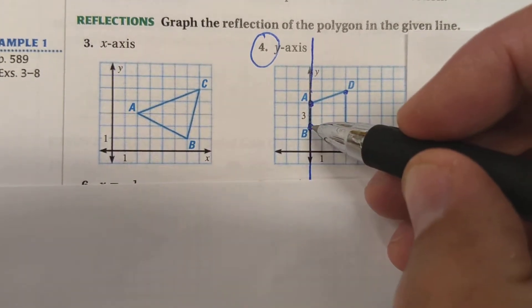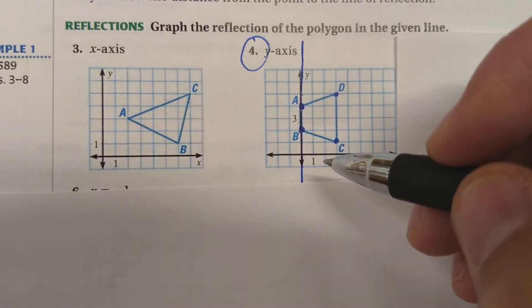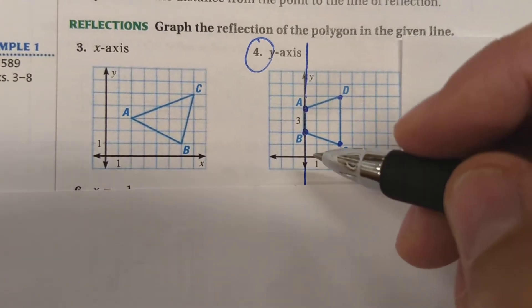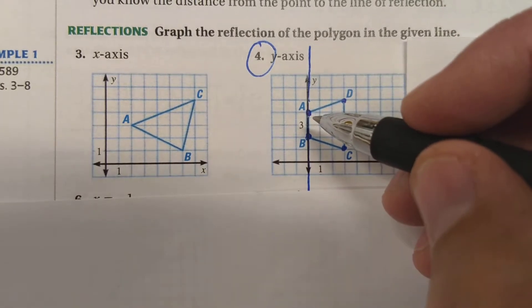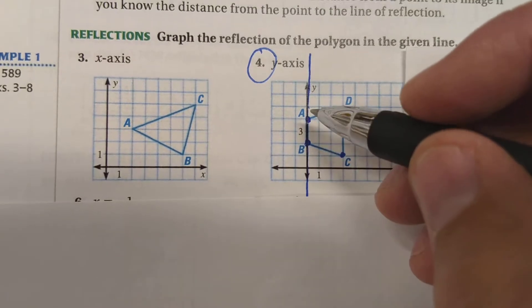A and B are both lying on the line of reflection. So if you think about how far away they are from that line, you'd say they're a distance of zero, which means when we reflect them over that line, that same distance of zero is going to make it look like it didn't change.